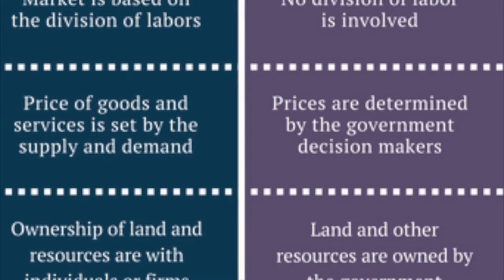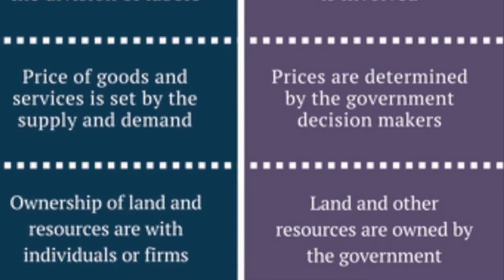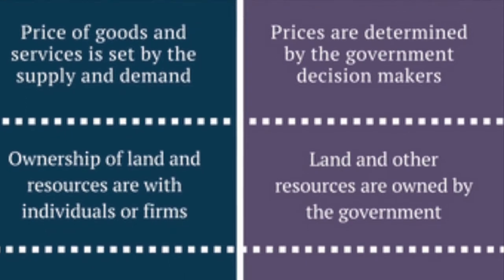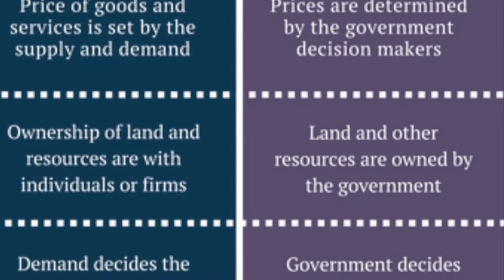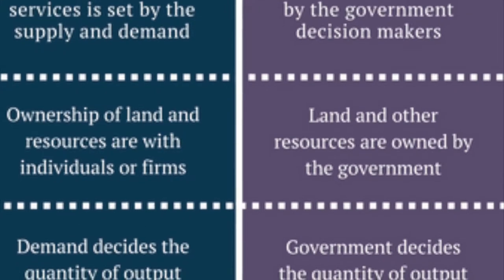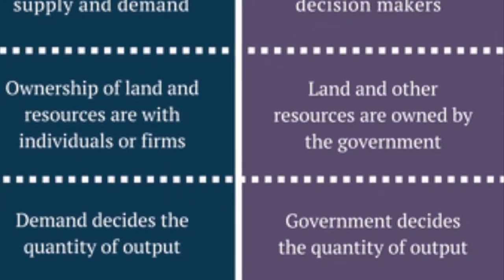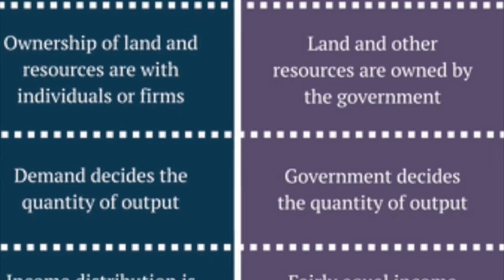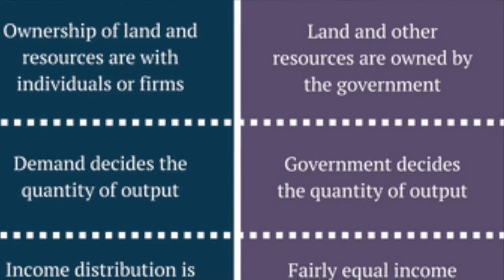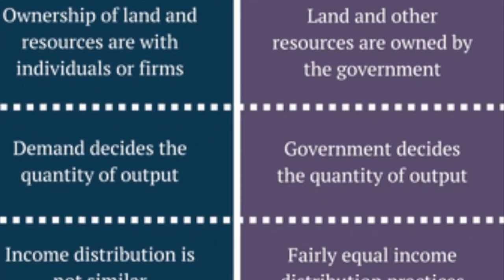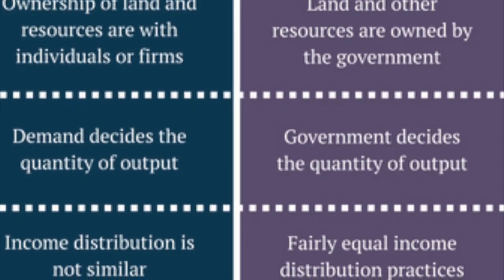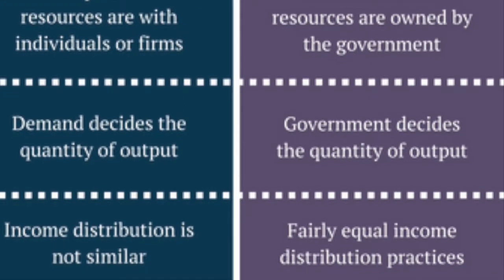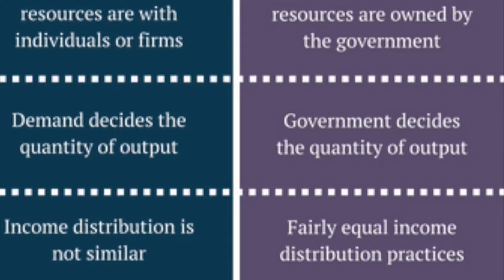In a free market economy, ownership of the factors of production — land and resources — belongs to individuals or firms. In a command economy, land and all resources are owned by the government. In a free market economy, demand decides the quantity of output, but in a command economy, the government decides the quantity of output. Income distribution is not similar between the two: within a command economy, fairly equal income distribution practices are generally maintained.